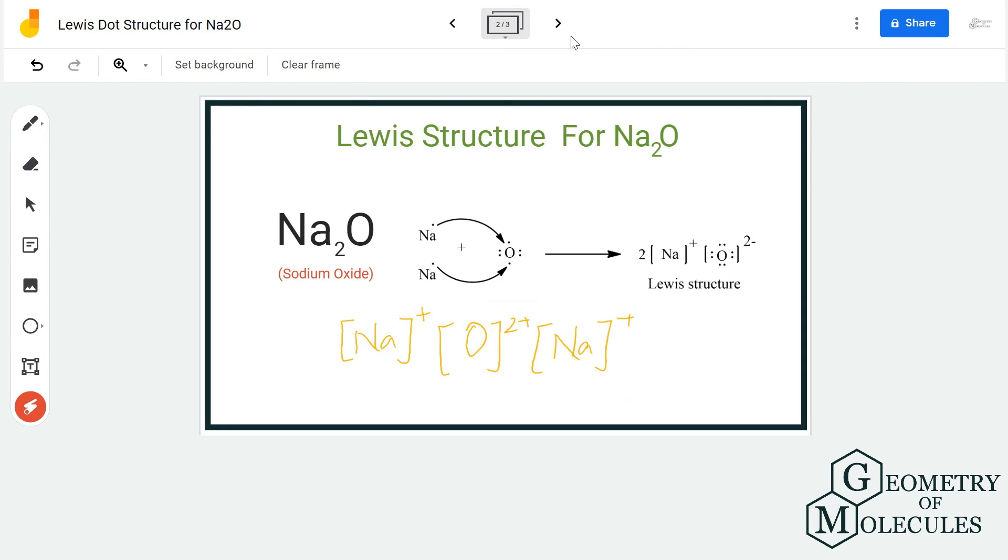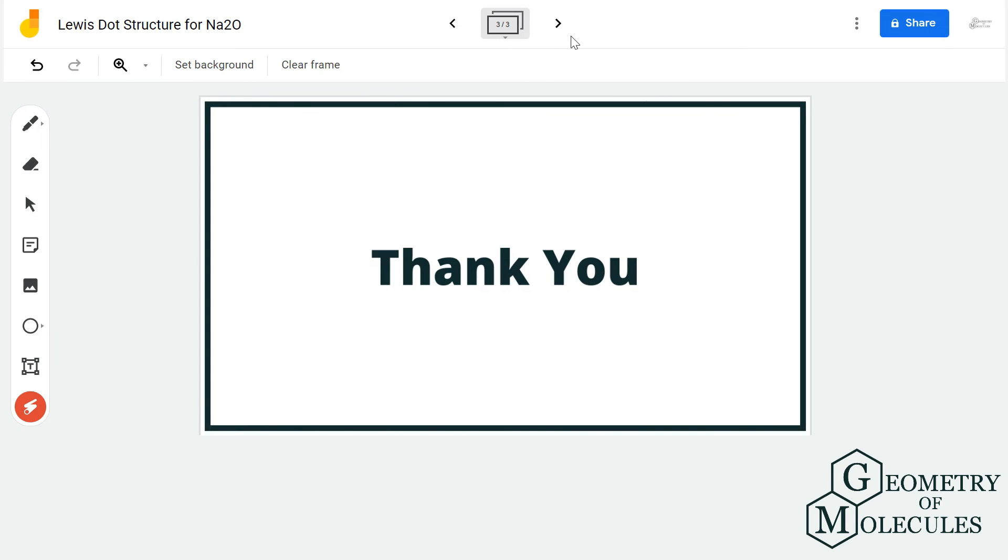It has repetitive units. Ionic compounds have that lattice structure. You can also read more about ionic compounds—there are some links given in the description box that could help you. For more such videos on Lewis structure, molecular geometry, and polarity of molecules, make sure to subscribe to our channel. Thanks for watching.